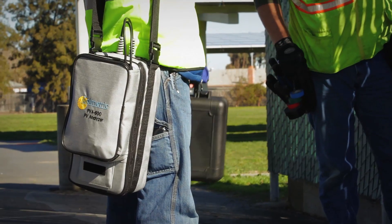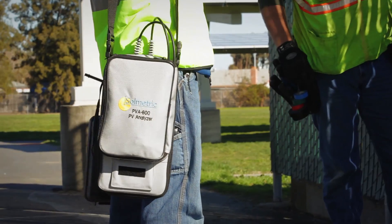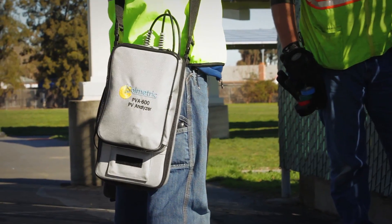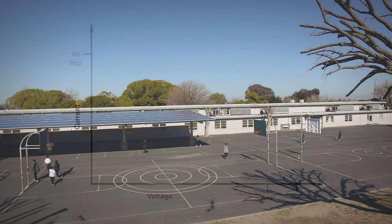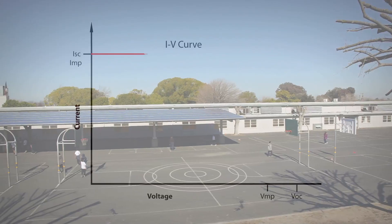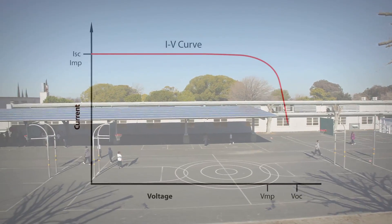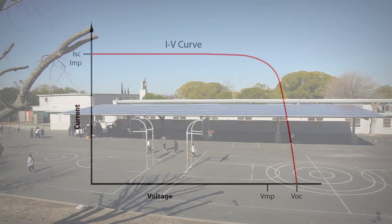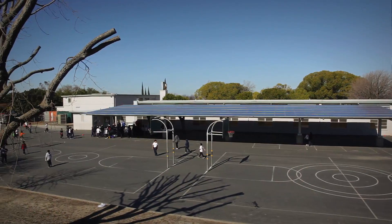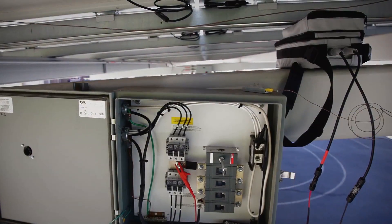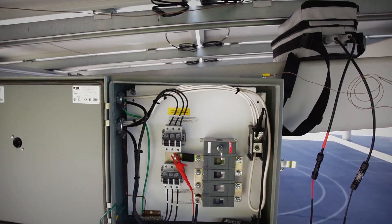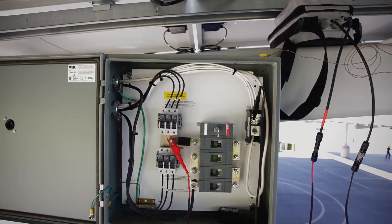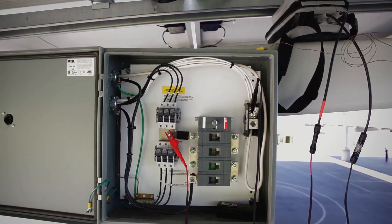The Solmetric PV Analyzer is a complete electrical test solution for verifying photovoltaic array performance. The PV Analyzer can acquire an IV curve trace for a PV module, string of modules, or multiple strings of modules. Measurements take just seconds, and the results are immediately compared to an advanced PV model to evaluate the performance of the system.